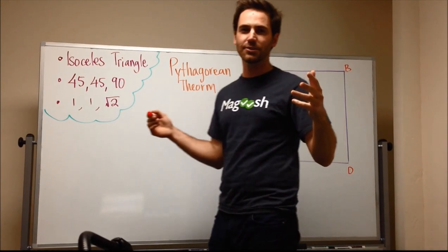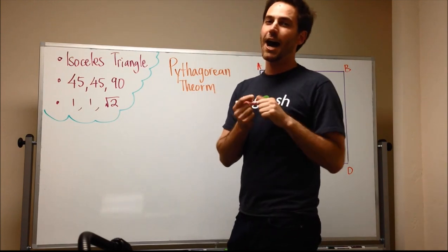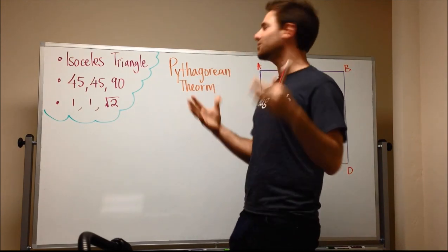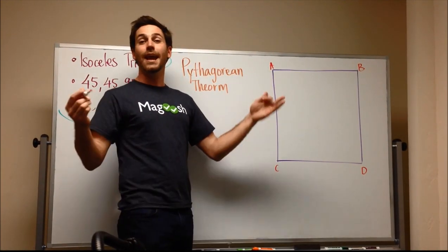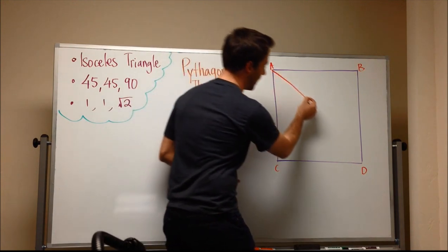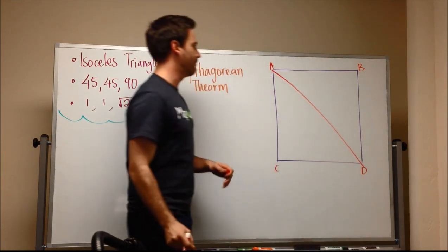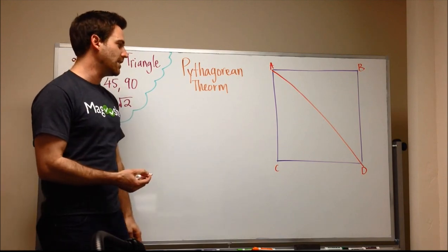So, triangles. One very special triangle that you need to know about on the GMAT can be derived from a square. And so we're going to start here with a square. And to make a triangle, it's very simple. We can divide it from A to D. And now what we have is two triangles.